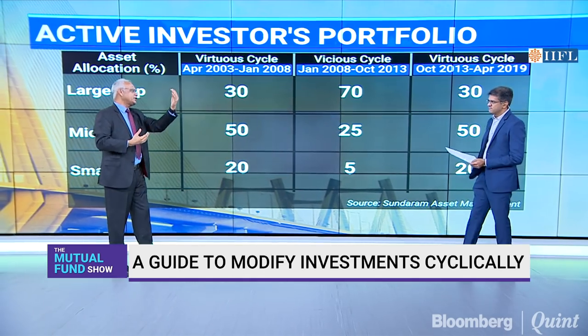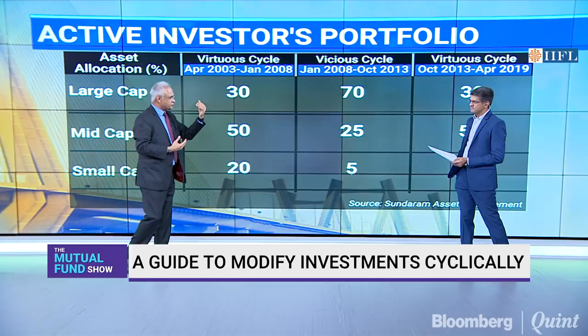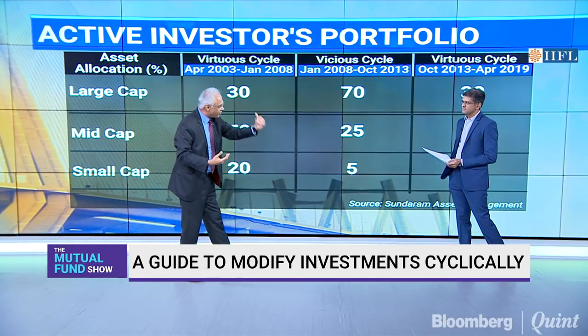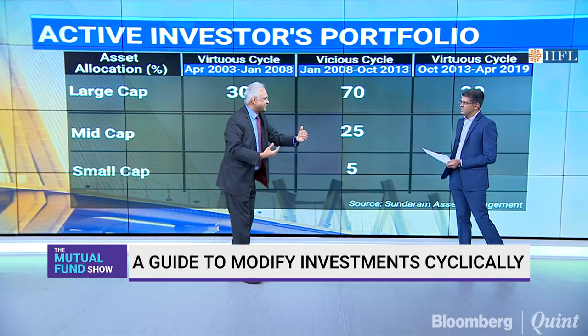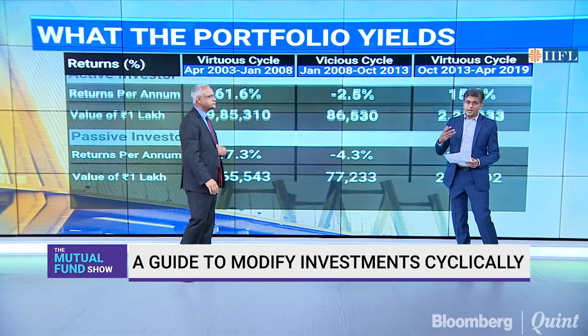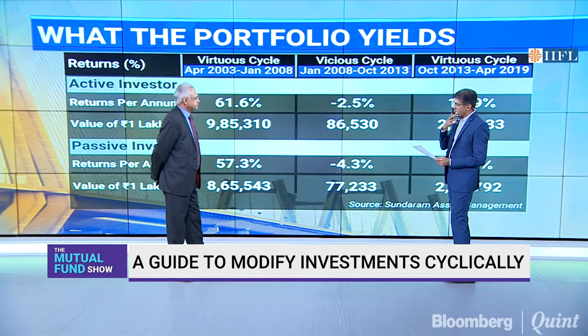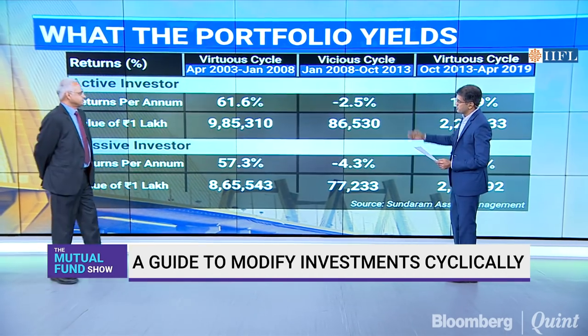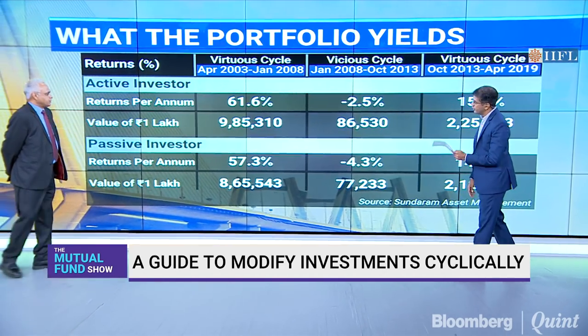Low and rising capacity utilization signals a good cycle; high and falling capacity utilization signals a vicious cycle. Now let's look at returns so you can see where you would miss out or do better as an active investor versus a passive investor.